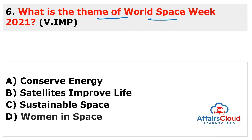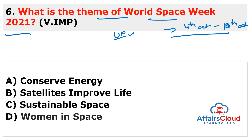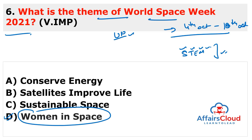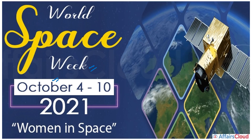Next question: What is the theme of World Space Week 2021? This week is celebrated by the United Nations annually from 4th to 10th October, to commemorate contributions and achievements in the field of space science and technology. It also recognizes and celebrates the historical role of women in space and aims to inspire the next generation of young girls to pursue careers in STEM — Science, Technology, Engineering, and Mathematics. The theme is 'Women in Space'.